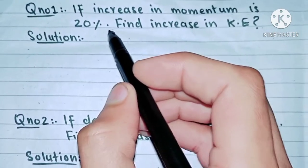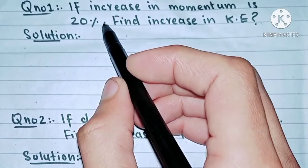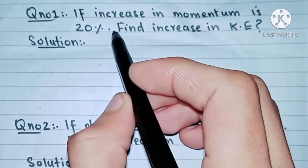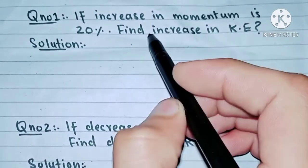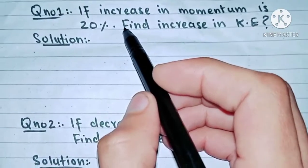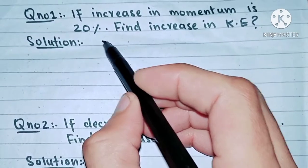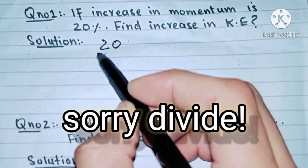First of all, if increase in momentum is given like this: if increase in momentum is 20%, find increase in kinetic energy. It is so simple. First of all, we will divide 20 by 100.